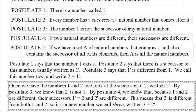Once we have the numbers 1 and 2, we look at the successor of 2, written 2 prime. By Postulate 3, we know that 2 prime is not 1, since 1 is not a successor of anything. By Postulate 4, we know that because 1 and 2 are different, their successors — 1 prime and 2 prime — are different. Since 1 prime is 2, 2 prime has to be different from 2. That means 2 prime is different from both 1 and 2. We have a whole new number — we call this 3.